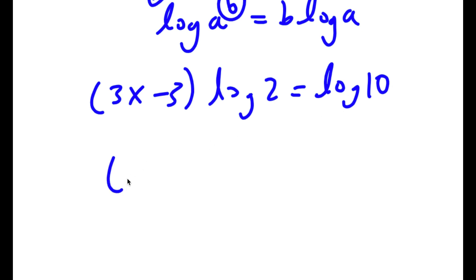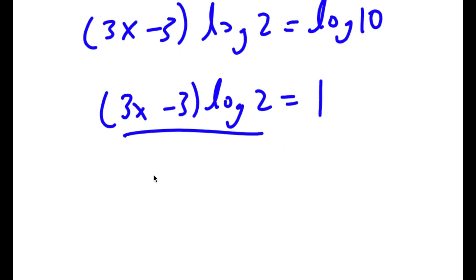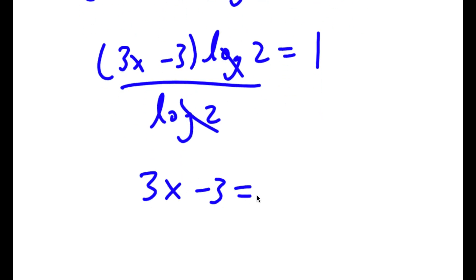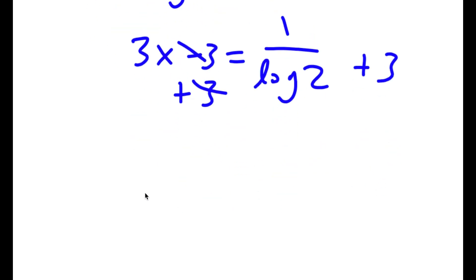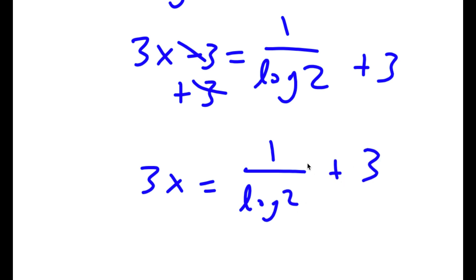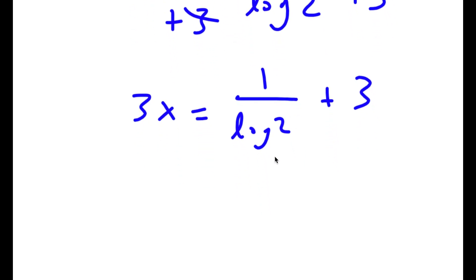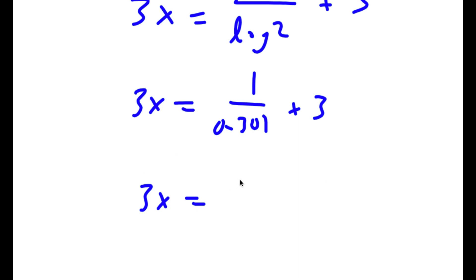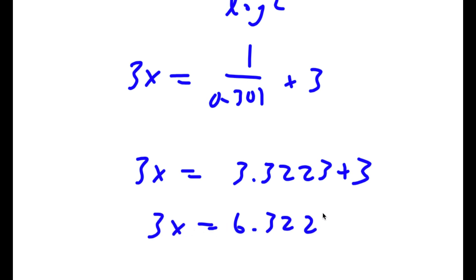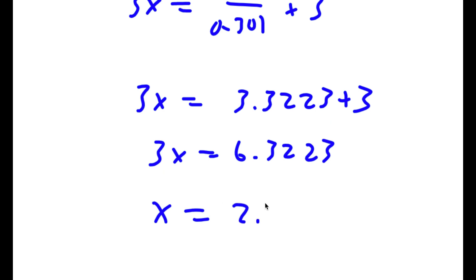Now log 10 is equal to 1, so I have (3x minus 3) times log 2 is equal to 1. Dividing both sides by log 2, I get 3x minus 3 is equal to 1 over log 2. Adding 3 to both sides, 3x is equal to 1 over log 2 plus 3, which is 1 over 0.301 plus 3, approximately 3.3223 plus 3, so 3x equals 6.3223, meaning x is equal to approximately 2.1074.